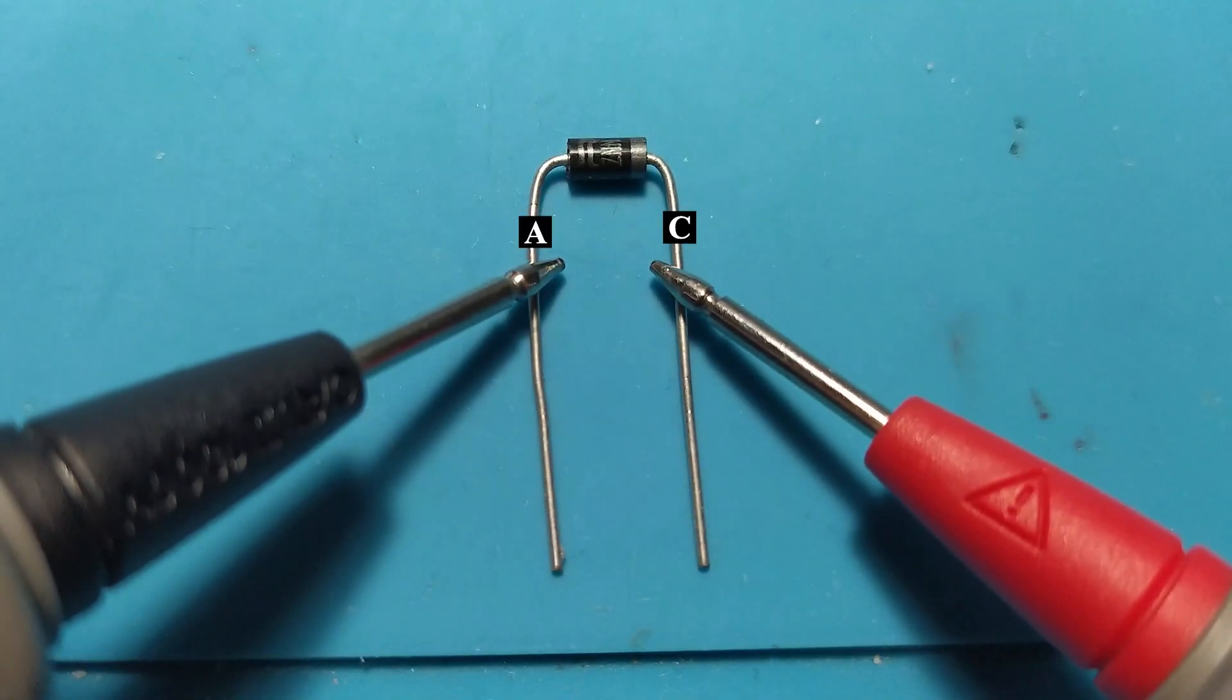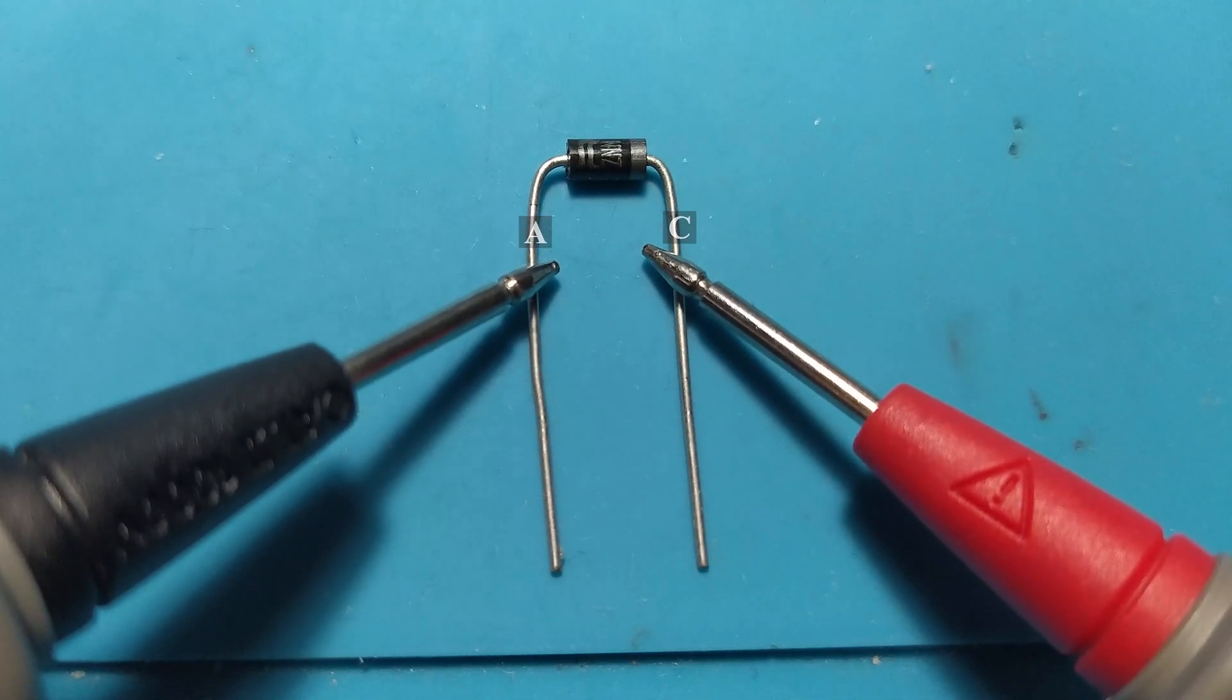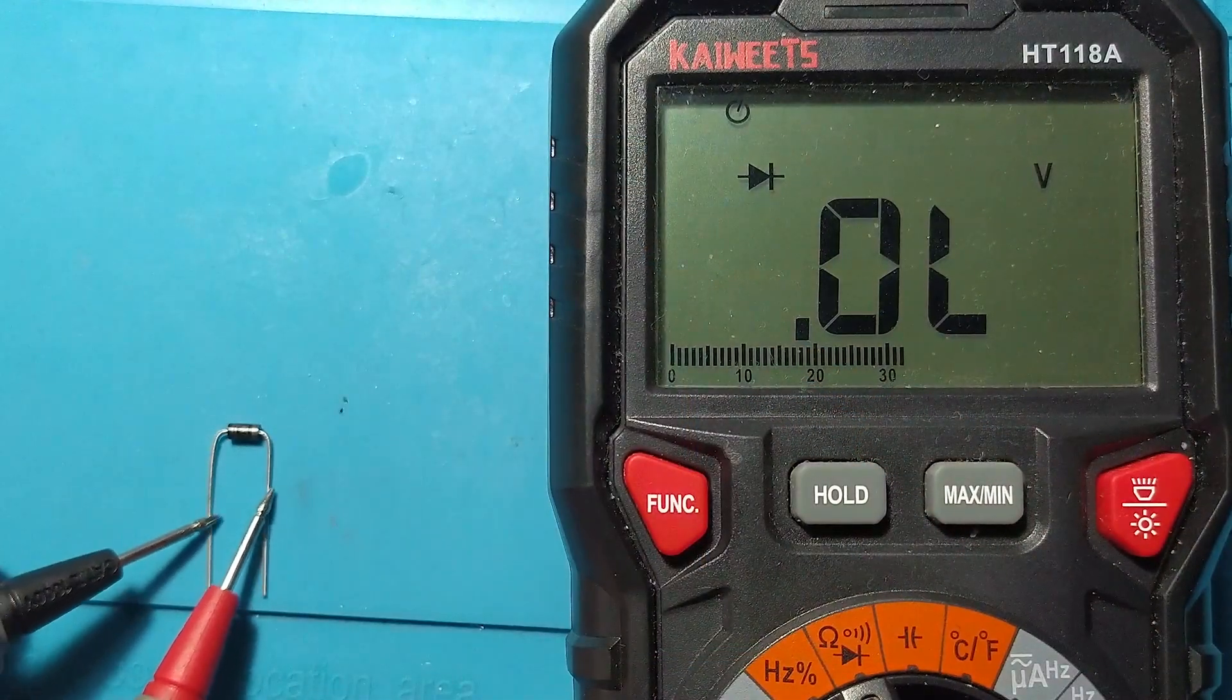With the black probe on the anode and the red probe on the cathode, the rectifier diode will not conduct current. The multimeter not showing any voltage drop.